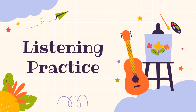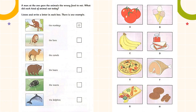Listening practice. Listen and look. There is one example. A man at the zoo gave the animals the wrong food to eat. What did each kind of animal eat today?